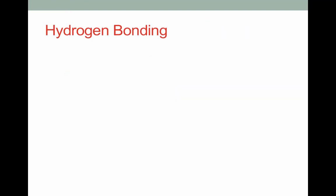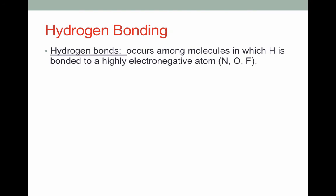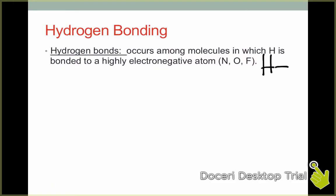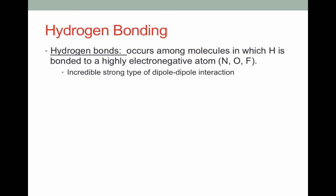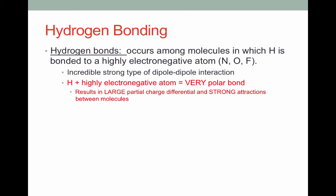Finally, let's move on to the strongest of our intermolecular forces: hydrogen bonding. Hydrogen bonding occurs among molecules in which hydrogen is bonded to a highly electronegative atom. So when you have molecules that contain H-O bonds, H-N bonds, or H-F bonds, you will have hydrogen bonding between molecules. This is an incredibly strong type of dipole-dipole interaction. The hydrogen bonded to the highly electronegative atom — N, O, or F — results in a very polar bond and a very large partial charge differential, creating a very strong attraction between molecules.